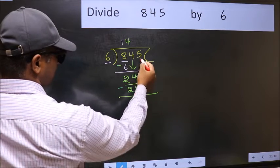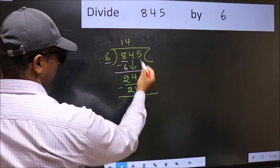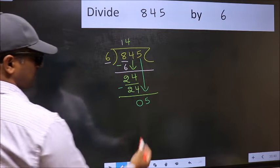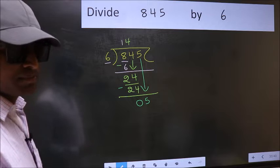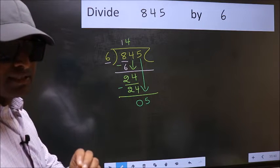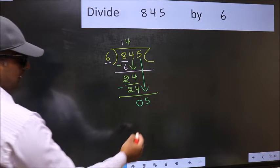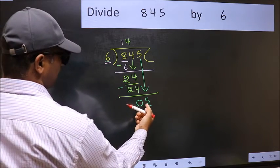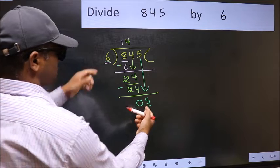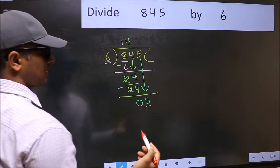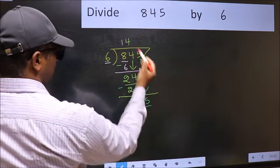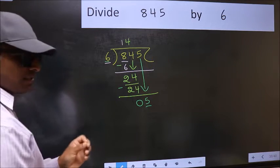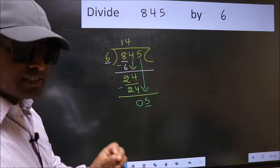After this, bring down the beside number. So 5 down. After this step, the mistake happens. And the mistake is this. Here we have 5 and here 6. 5 is smaller than 6. So what many do is, they directly put dot and take 0, which is wrong.